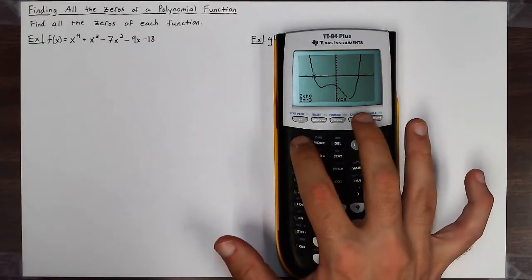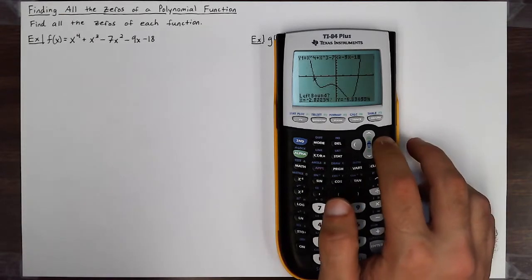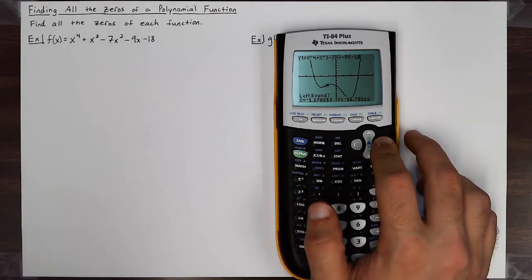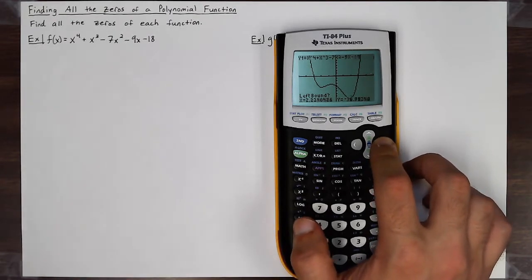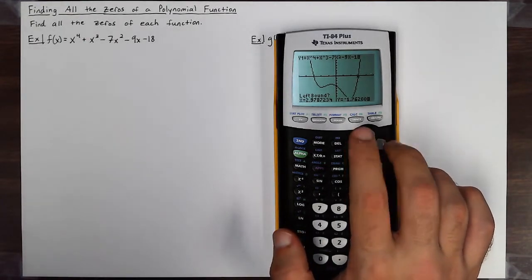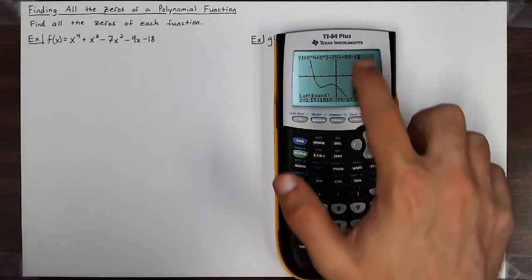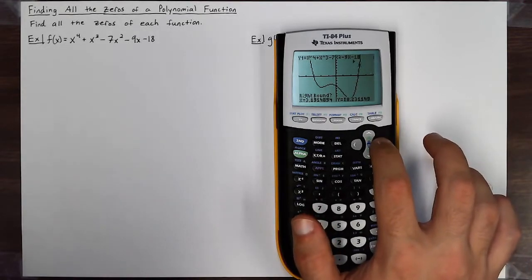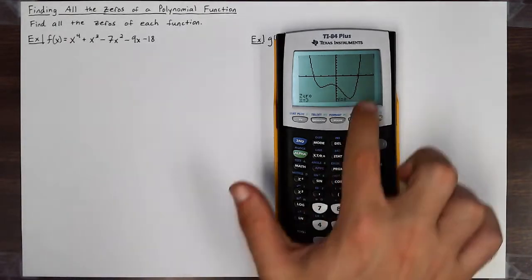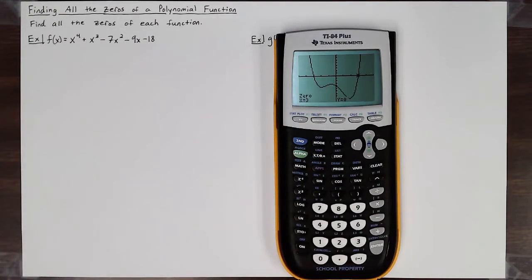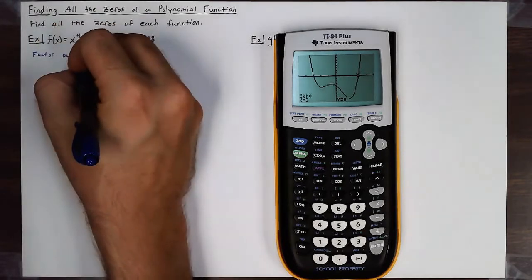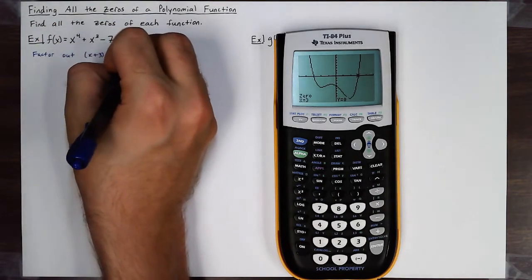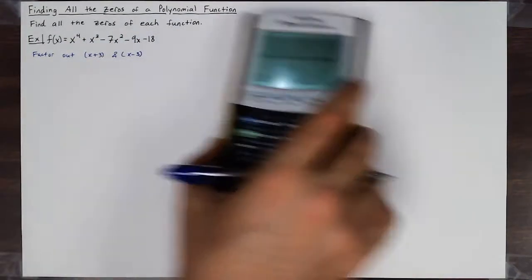I can also use the same feature on the other zero all the way to the right. The technique isn't too hard to use: set the left bound, hit left a few times from the zero, then set the right bound and hit right a few times, hit enter twice. My other zero is at three. So I know I have zeros at negative three and at three, and I'm going to factor out (x+3) and (x-3) from that polynomial.